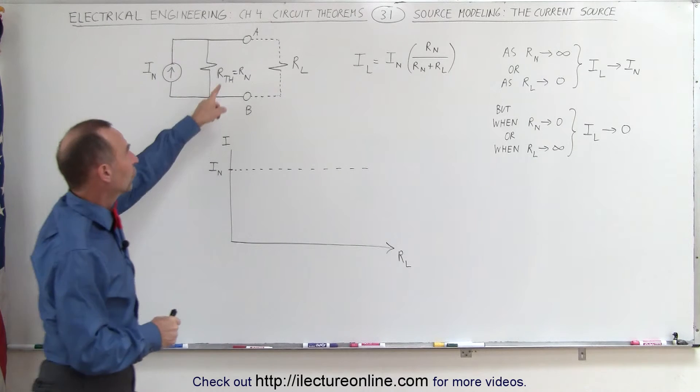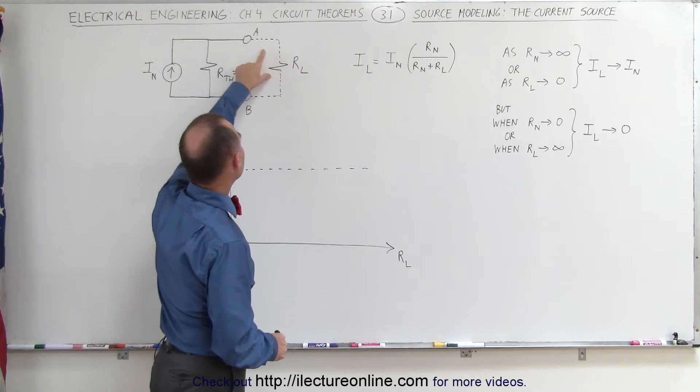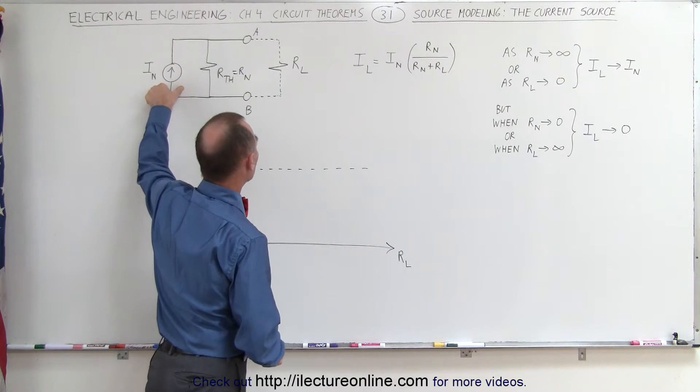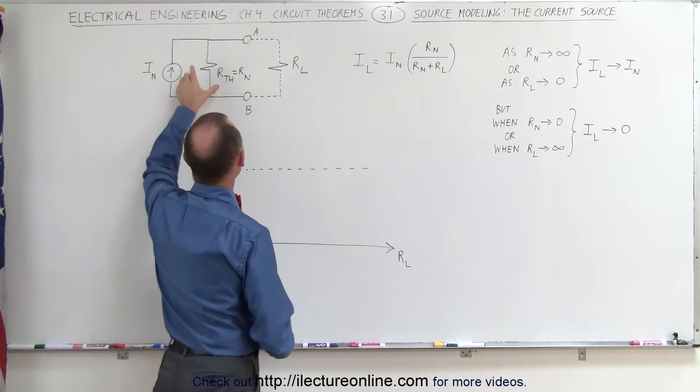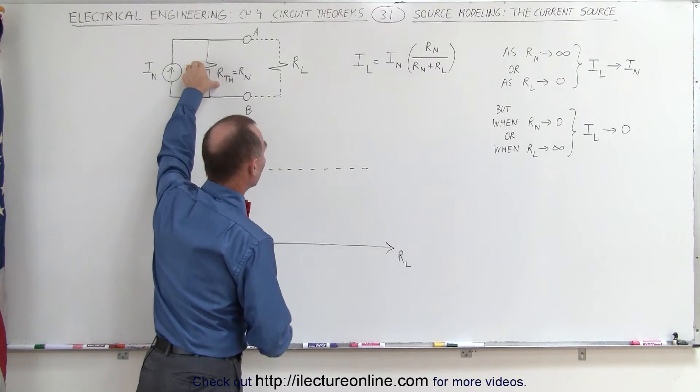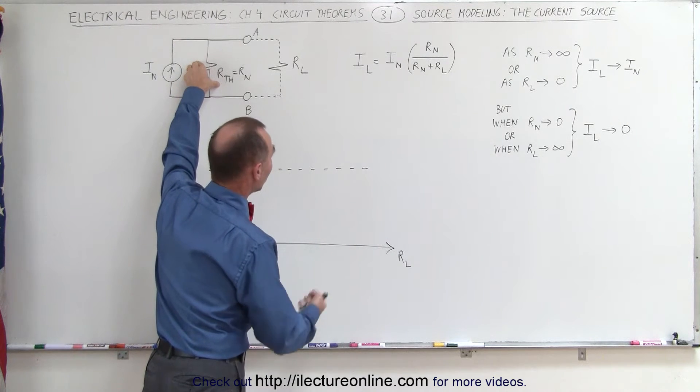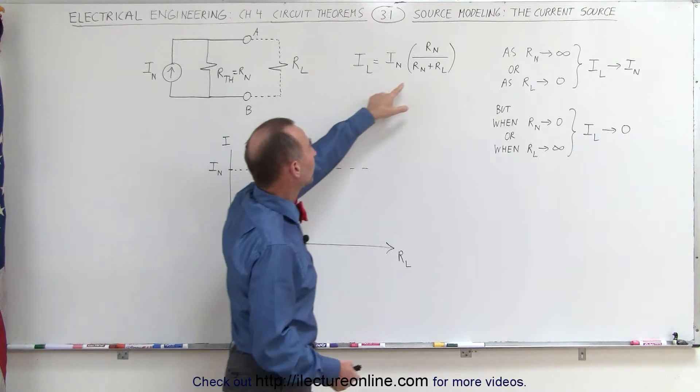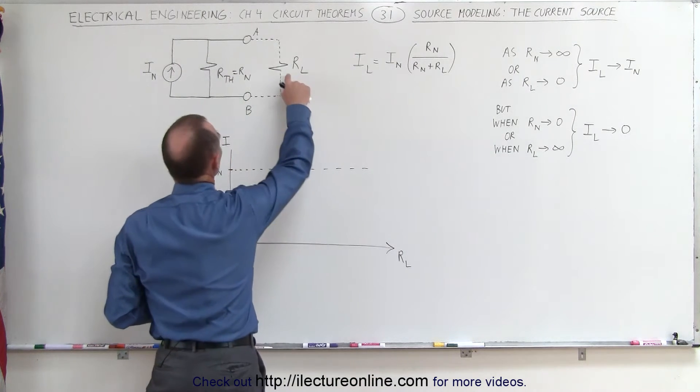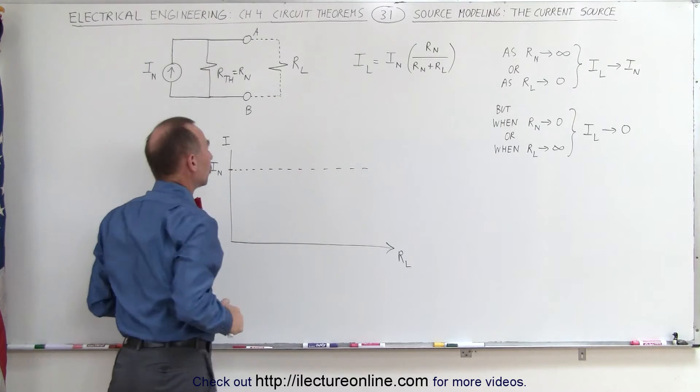The current through the load resistor will be equal to the current provided by the source times the ratio of the internal resistance, which is the Thevenin resistance or also called the Norton resistance, divided by the total resistance with the load resistor and the Norton resistance.